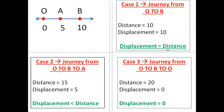Now focus on case number 2. Journey from O to B and then to A. It has traveled to B then to A. Total distance is 10 plus 5, that is 15. Displacement is 5. So the conclusion is that sometimes displacement is less than distance — in this case 5 is less than 15. So displacement is less than distance. In the first case we got displacement equal to distance, and sometimes displacement is less than distance.